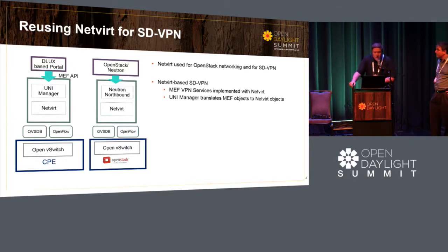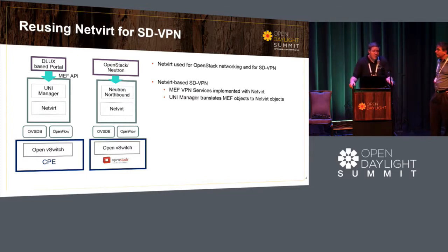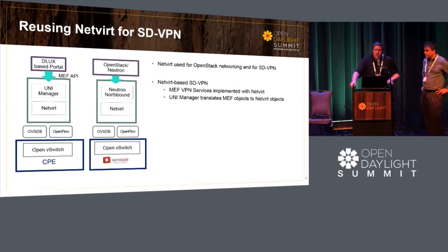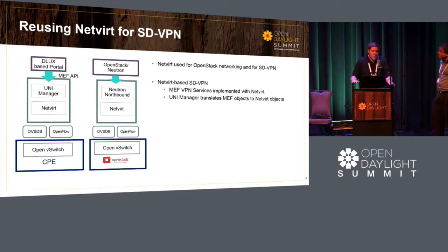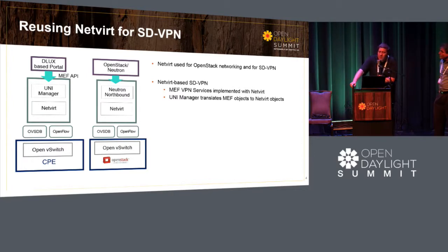In the OpenStack scenario, you have OpenStack Neutron calling the REST API of Neutron Northbound, which translates into a NetVirt API, which has the logic to create OpenFlow rules and OVS DB configuration so the networking works. We wanted to do the same thing but MEF-based. We export a MEF-based API and also have a Deluxe-based portal to create those networks, then translate into the same NetVirt objects which create all the networking. So at the Southbound we have the same thing, but we support different APIs.